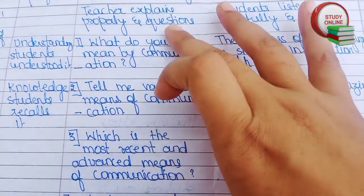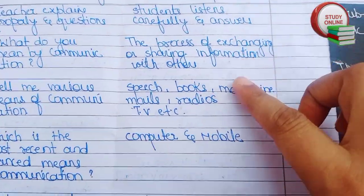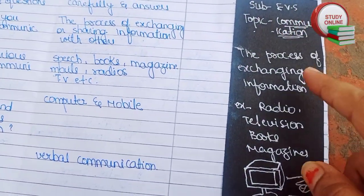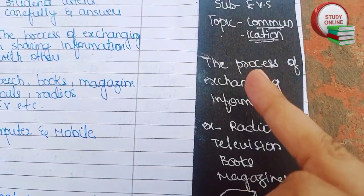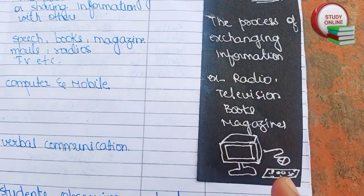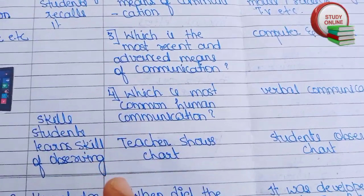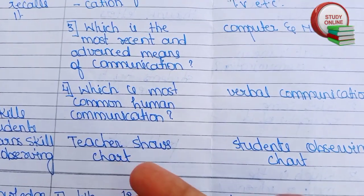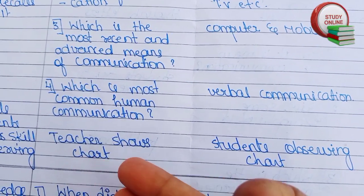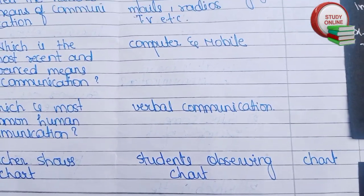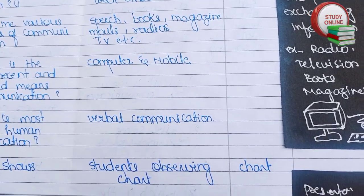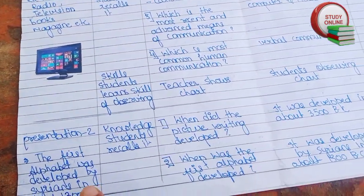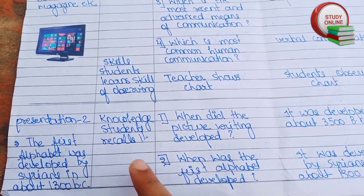After explaining everything properly, the teacher has to ask questions. Here you can see the list of questions I've added, along with the expected answers we expect from students. Then comes the blackboard work, written like this. After explaining, the teacher shows a chart, students observe the chart, and for teaching aids we write 'chart'.